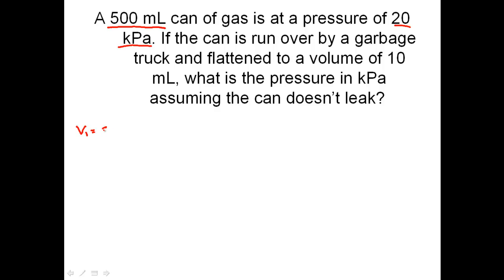Volume 1 is going to be 500 mLs, and the first pressure that volume is at is going to be 20 kPa. Now, you're going to notice that temperature has not been expressed. We're just going to keep that as an aside there. That's my first volume, pressure, and temperature. Now, the second volume, if the can is run over by a garbage truck and flattened to a volume of 10 mLs. So it went from 500 mLs to 10 mLs. It's really shrunk down a lot. What is the new pressure inside?